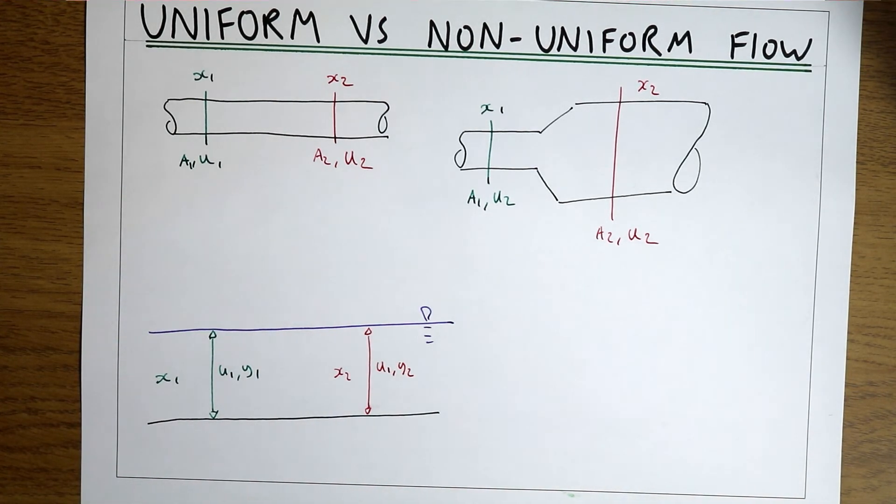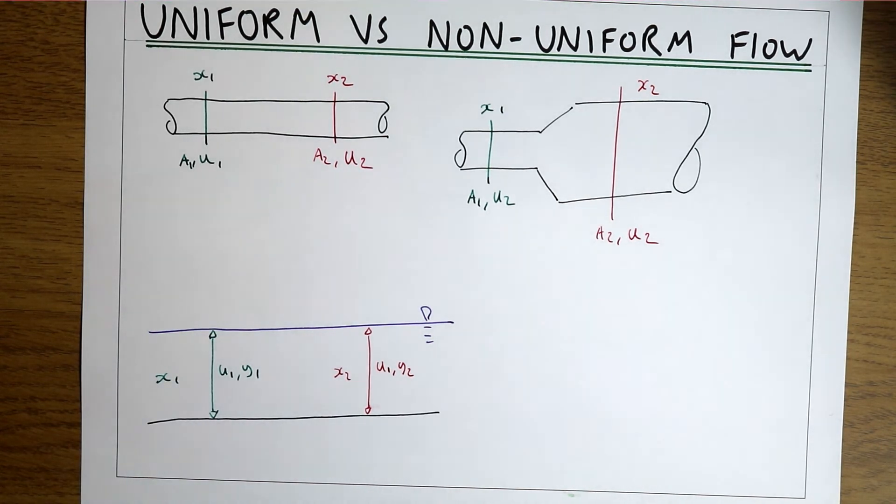An example of this would be a river where the gradient of the river is balanced with the frictional forces, so the height of the water is constant as we go downstream.